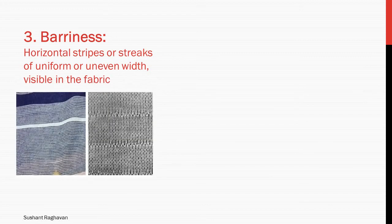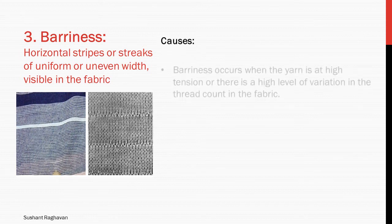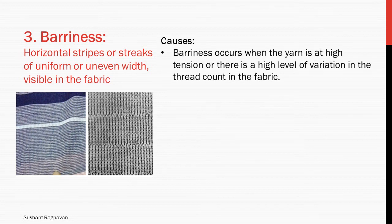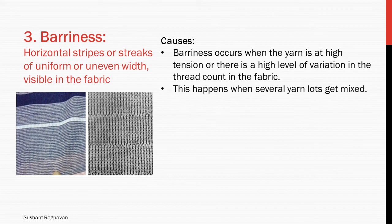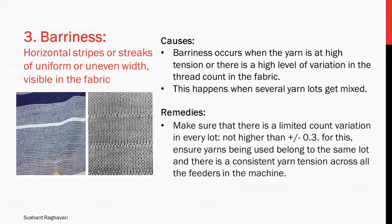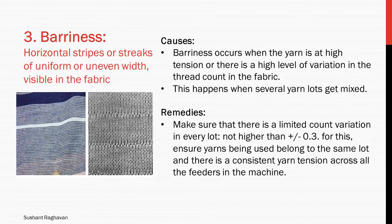Bariness: horizontal stripes or streaks of uniform or uneven width visible in the fabric. Causes: bariness occurs when the yarn is at high tension or there is a high level of variation in the thread count in the fabric. This happens when several yarn lots get mixed. Remedies: Make sure there is a limited count variation in every lot, not higher than plus or minus 0.3. Ensure yarns belong to the same lot and there is consistent yarn tension across all the feeders in the machine.